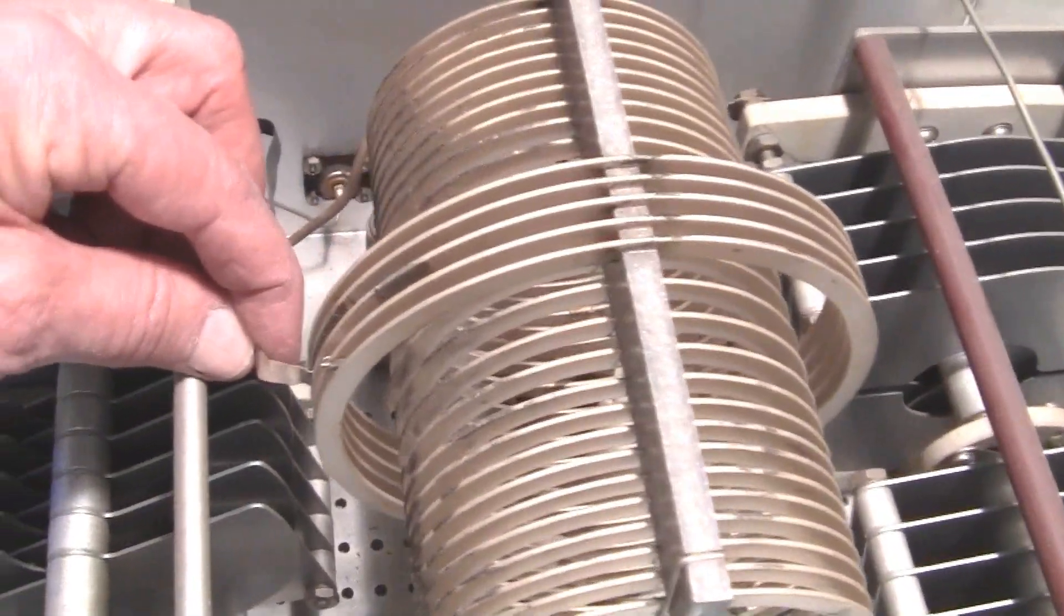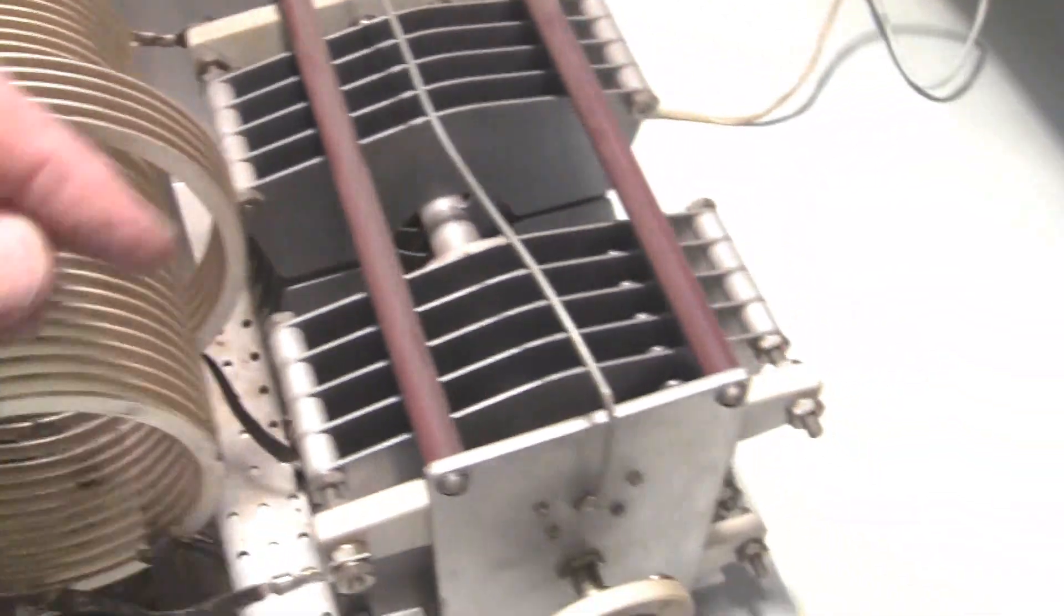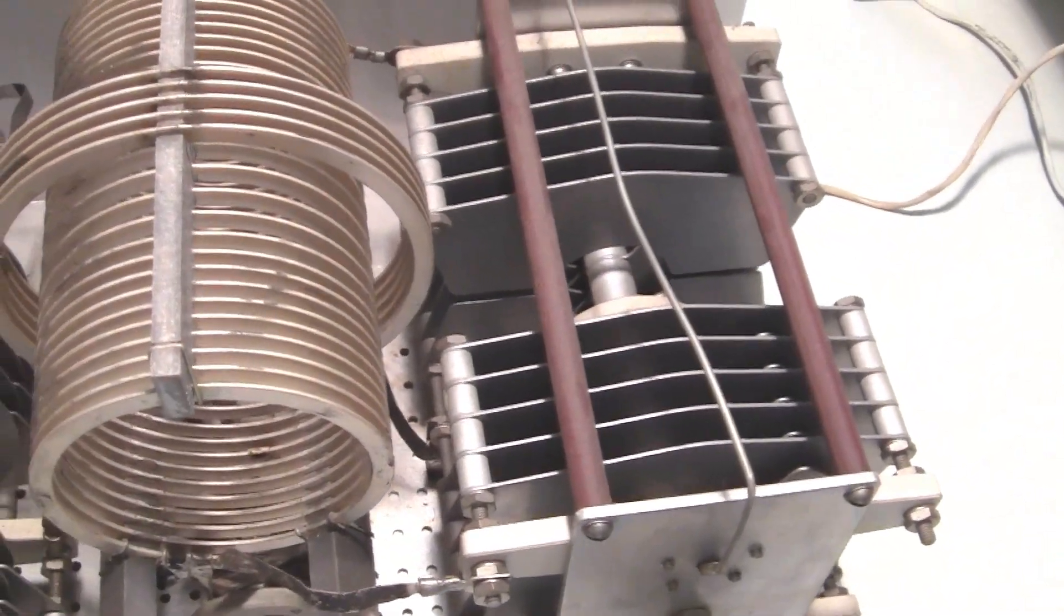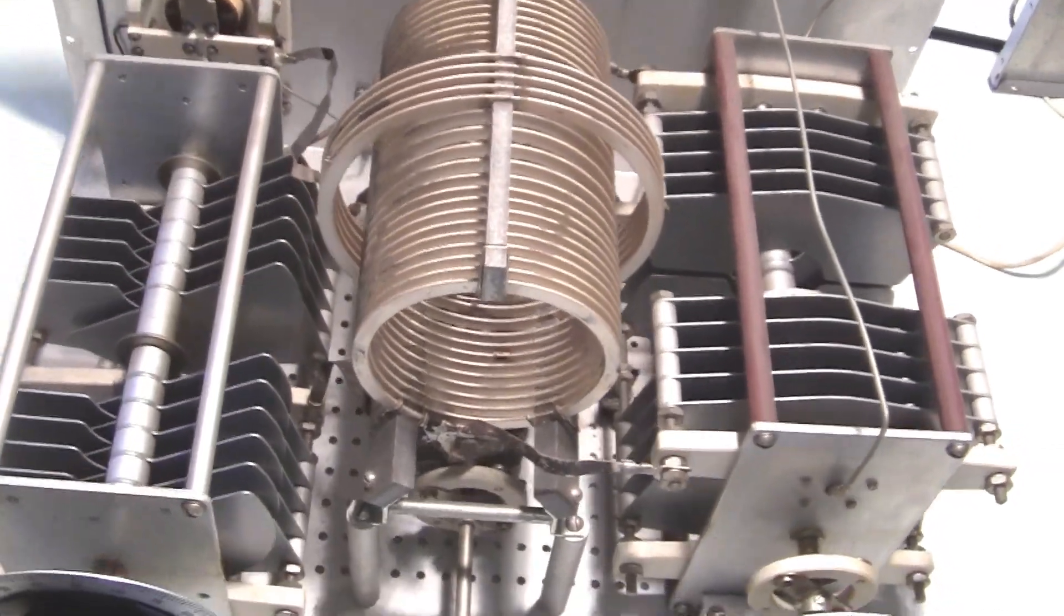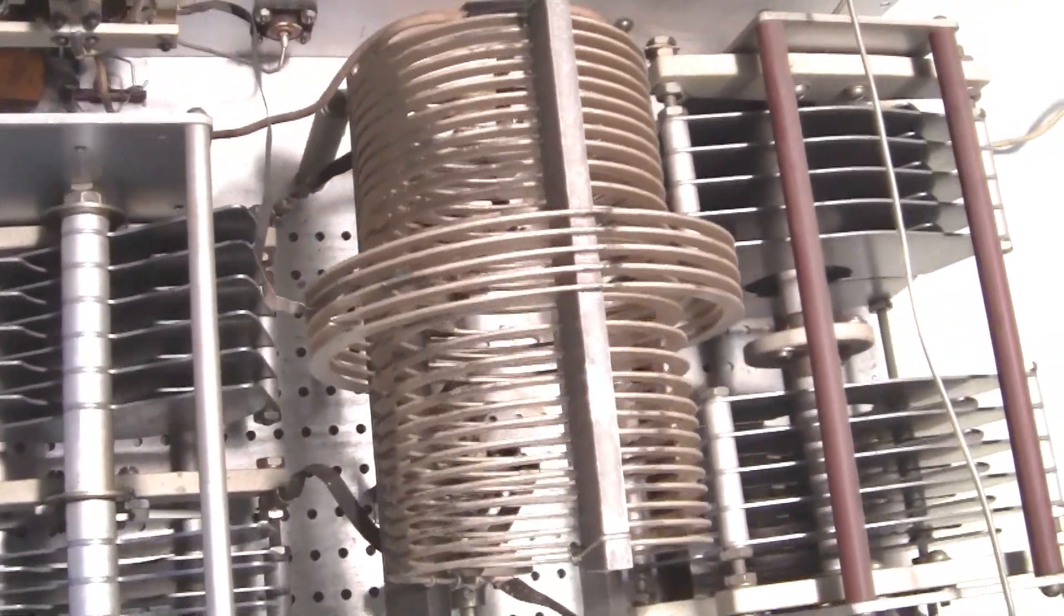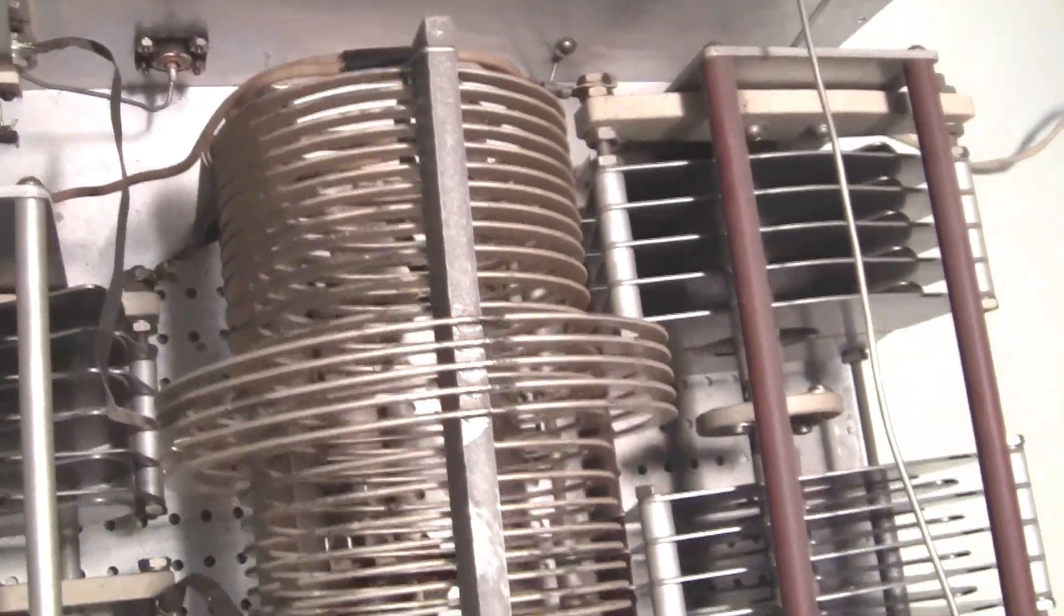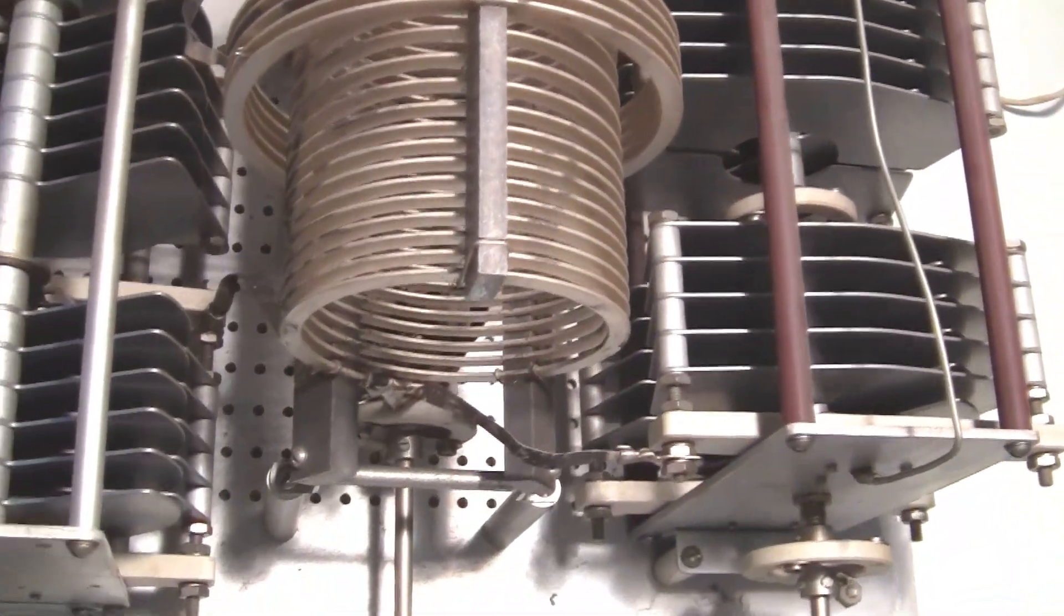You see all the connections, all the wires, all the straps are very, very large. And this unit would handle several kilowatts without any problem whatsoever. So this is the inside of the Johnson Matchbox Kilowatt Matchbox Tuner.